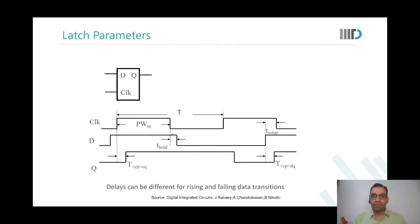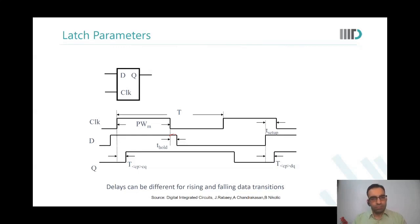Raghav, you have a question — your hand is raised. Can the sampling edge — I'm clear on that — but for example, when the clock becomes high for the first time, my latch is getting transparent from that moment. In this case, will I call only the falling edge the sampling edge, or both the rising and the falling — the sampling edge? What exactly do you mean by sampling? Is it when it's transparent, or — that terminology is getting me confused.